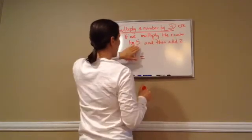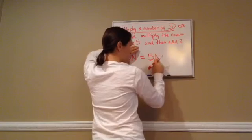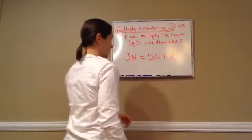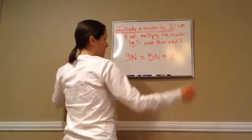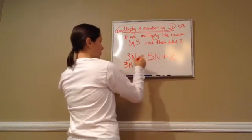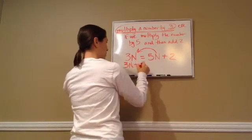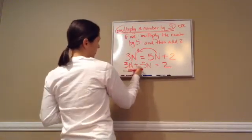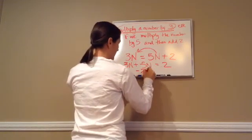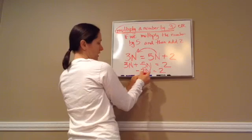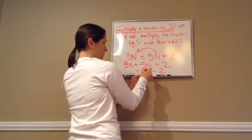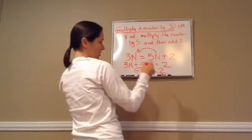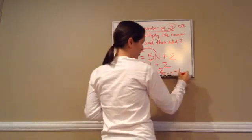If we multiply the number by 5, that's 5n, and then add 2. So the equation is 3n = 5n + 2. We take 5n to the other side and it becomes negative 5n. So 3n minus 5n equals 2, which gives negative 2n equals 2. Since we want n by itself, we divide both sides by negative 2. 2 divided by negative 2 gives a final answer of negative 1.